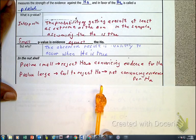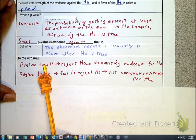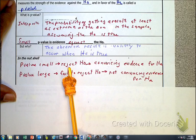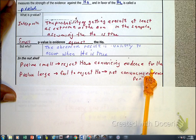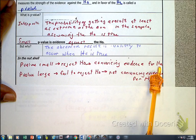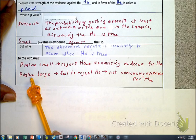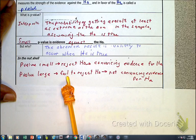So let's pull this together in a nutshell. When you have a p-value that's small, you're going to reject the HO, reject the null hypothesis, and there's convincing evidence for the alternative.